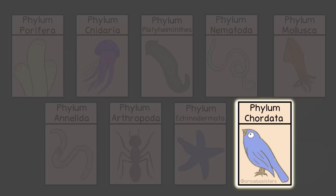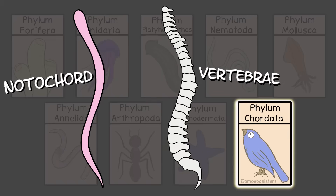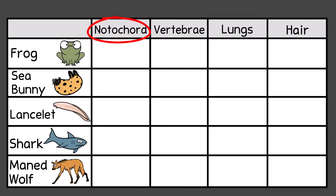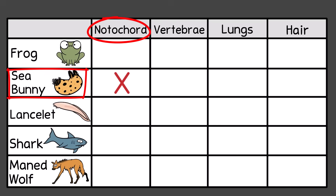Now I'm going to put some specific characteristics in the top row. First is a notochord. Animals in the phylum Chordata have this, at least at some point in their development. A notochord is a flexible rod-like structure that runs along the back. For animals that are vertebrates, it's there at embryonic development but often gets replaced by vertebrae, although remnants can often still be found. One of these animals is not in Chordata and thus does not have a notochord — it's the sea bunny. We'll put an X on the notochord for the sea bunny, but all the other animals have it.